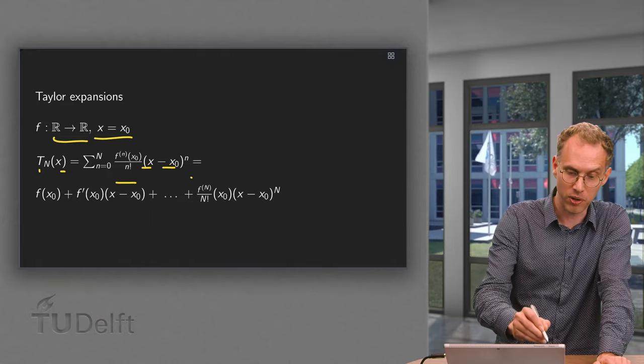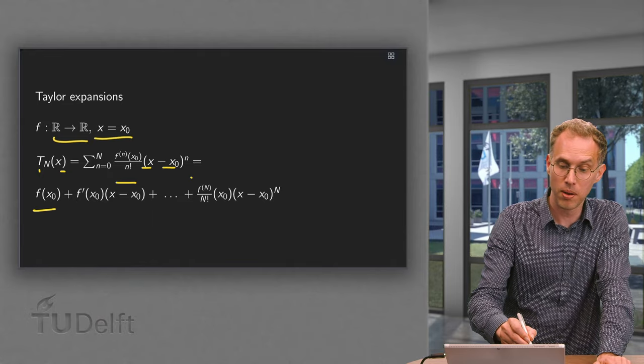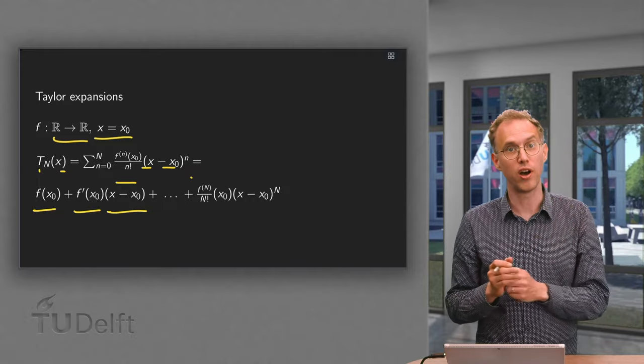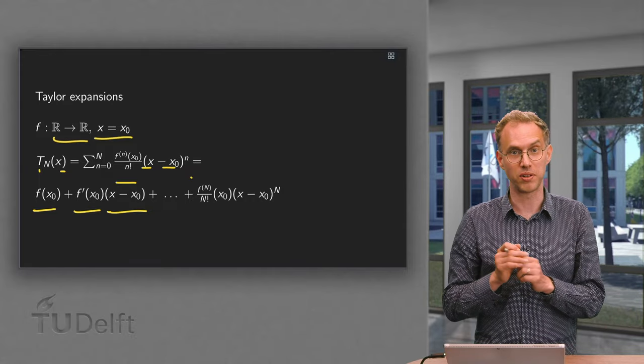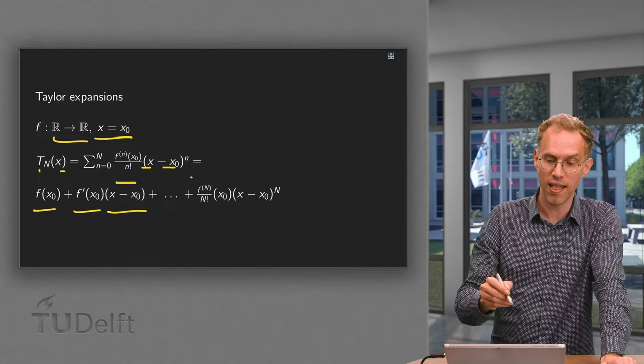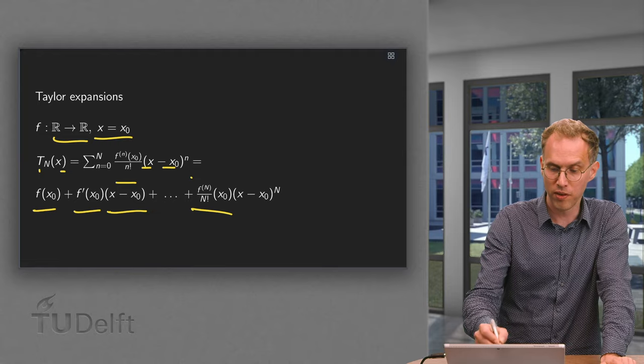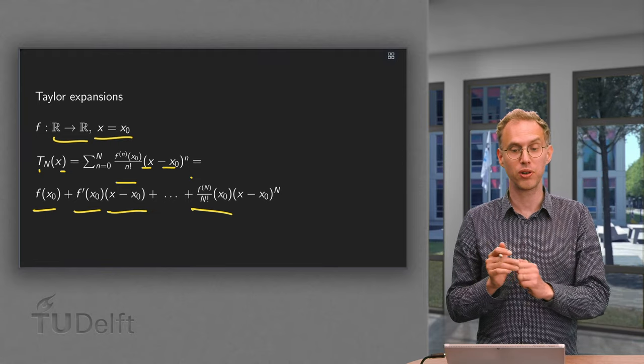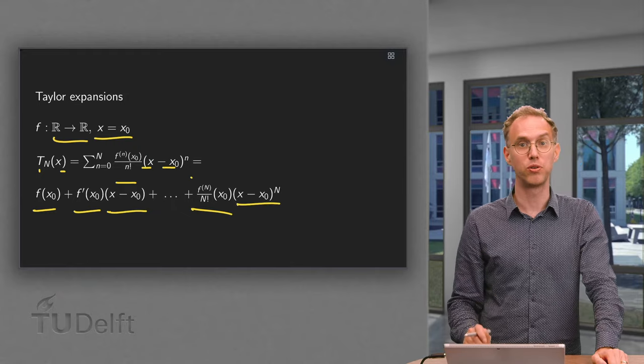The nth Taylor polynomial: f(x₀) plus f'(x₀) times (x - x₀) plus 1/2 times f''(x₀) times (x - x₀) squared. And then the last term will be the nth derivative at x₀ divided by n factorial times (x - x₀) to the power n.